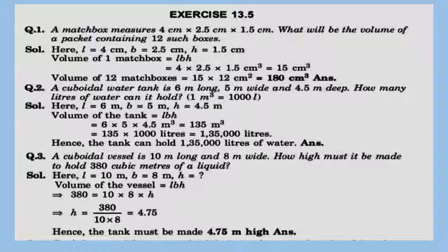Now the exercise: a matchbox measures — length, breadth, and height are given as three dimensions. We have to find the volume of twelve such boxes. Length is 4 cm, breadth is 2.5 cm, and height is 2.5 cm. The volume of one matchbox equals l × b × h. Substituting the values gives the volume of one matchbox. Multiplying by 12 gives 180 cm³. Don't forget to write the unit.